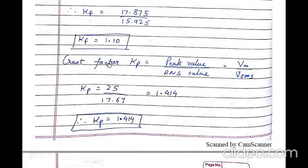Crest factor or peak factor Kp is equal to peak value upon RMS value, that is Vm divided by Vrms. We know Vm is equal to 25 and Vrms is equal to 17.67. Substituting these values, Kp is equal to 25 divided by 17.67. So peak factor or crest factor Kp is equal to 1.414.